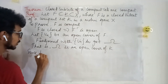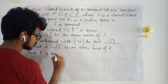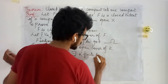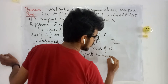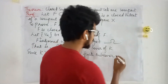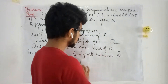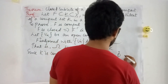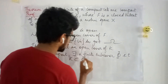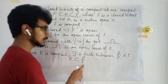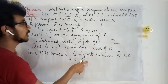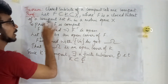Since K is compact, there exists a finite subcover. We denote this finite subcover by phi, such that K is contained in phi. This is a finite subcover of K. With this finite subcover we are going to identify some finite subcover for F.